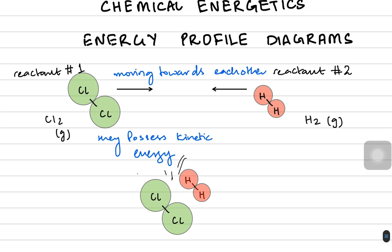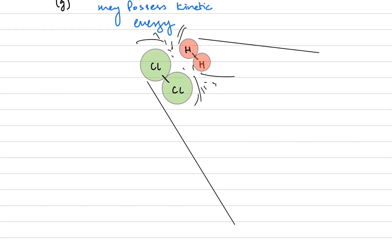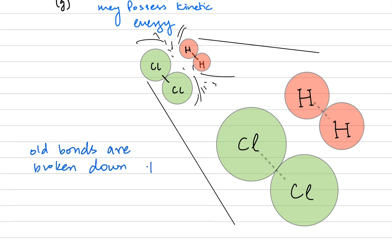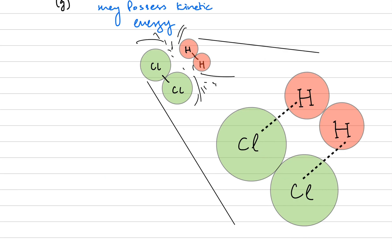As soon as they collide, the bonds of the reactants have to be broken if they want to make a product. So as soon as the collision happens, the H–H bond and the Cl–Cl bond have to be broken. The old bonds are broken down and the new bonds are made — the H–H bond and Cl–Cl bond are broken, and HCl bonds are made.